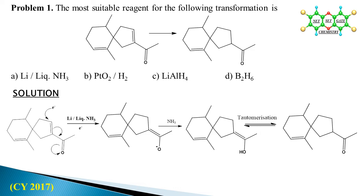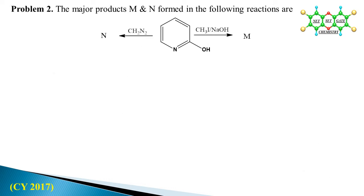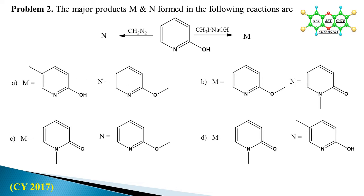Option A is the right answer. Problem number two: the major product from the following reaction. The transformation involves hydroxypyridine reacting — see the options A, B, C, D and identify the reaction centers.